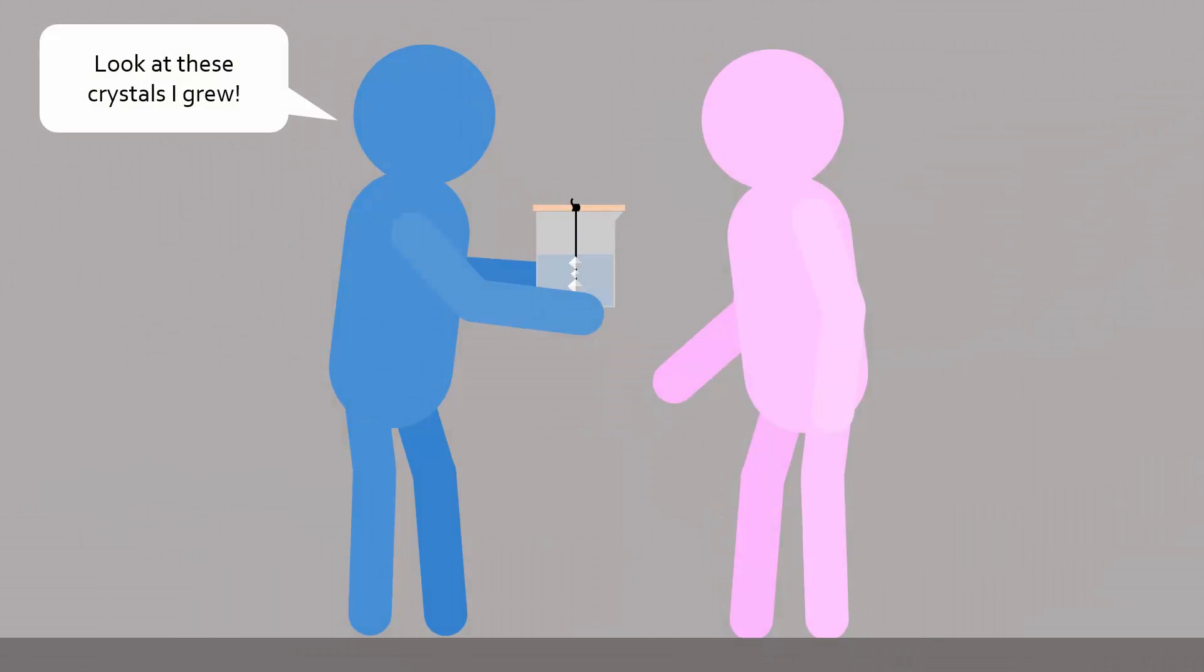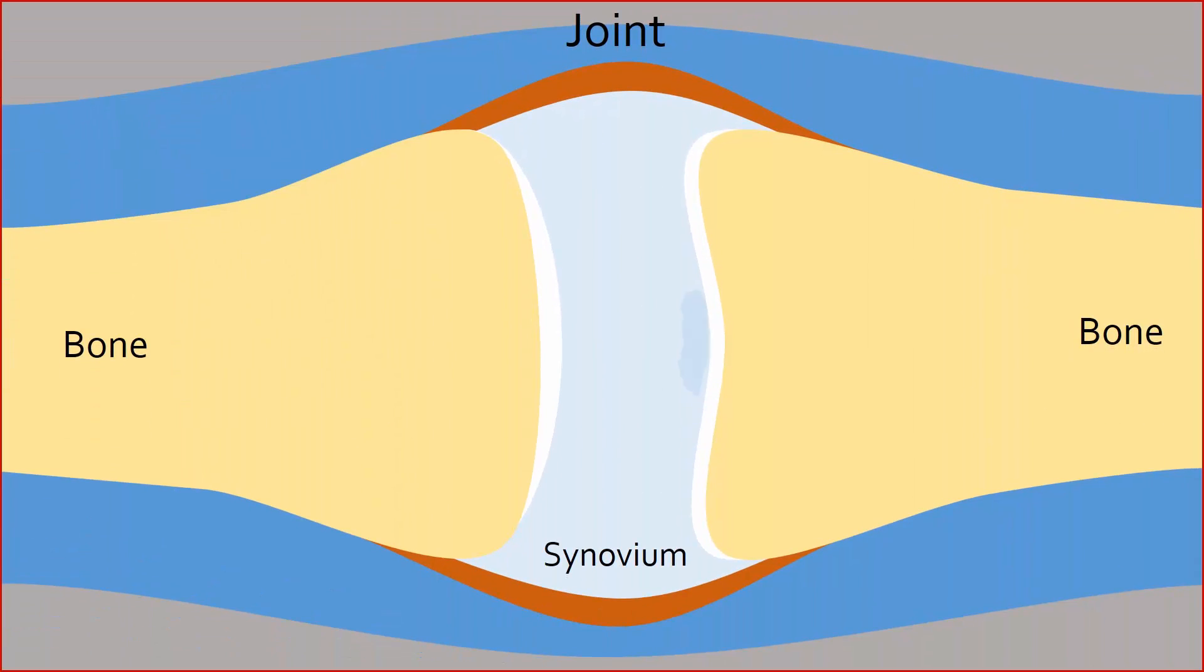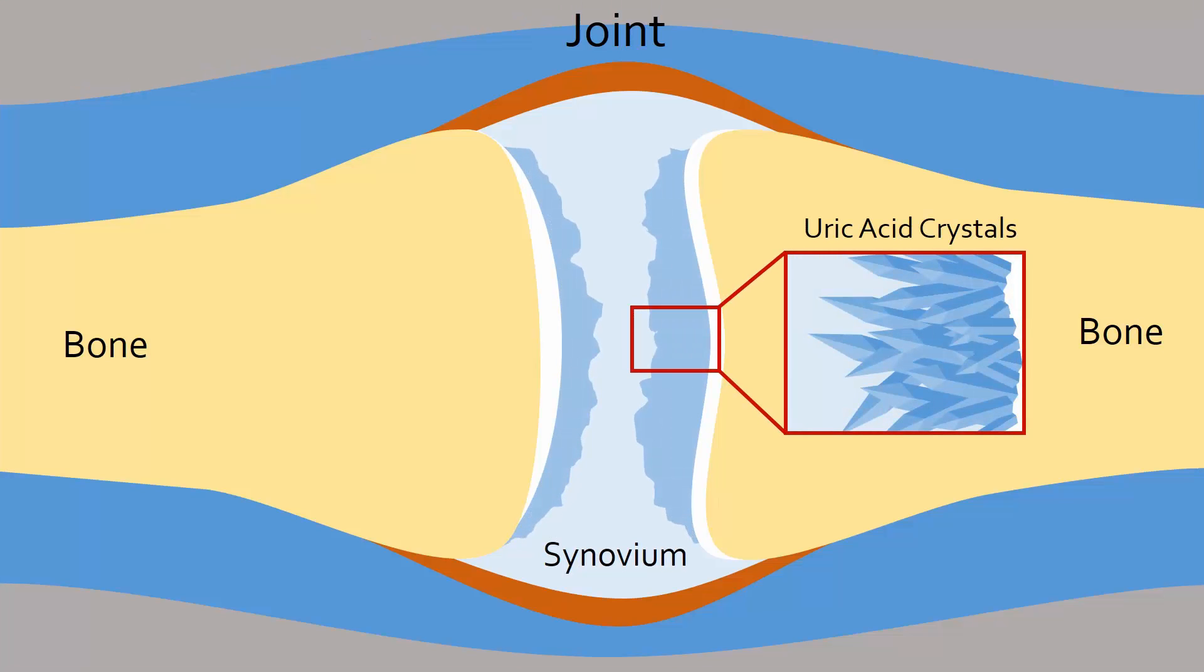This is an awesome phenomenon to show your friends, but imagine if crystallization occurred within your body. In people who have gouty arthritis, or gout, a compound known as uric acid begins to form crystals inside joints, which leads to intense pain.